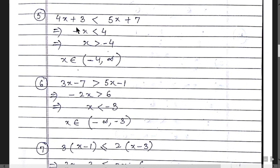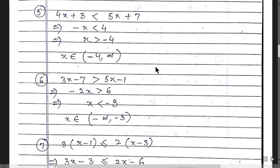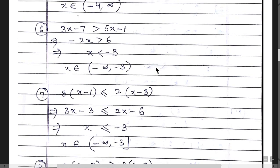Question 5: 4x + 3 < 5x + 7. Shifting 5x to the left gives -x, and shifting 3 to the right gives 4. When the negative sign is eliminated, the less than sign converts to greater than, so x > -4. The answer is (-4, ∞).